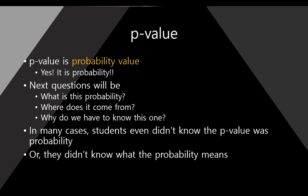The next question will be: what is this probability? And where does it come from? And why do we have to know this number — p-value, probability, and 0.05?